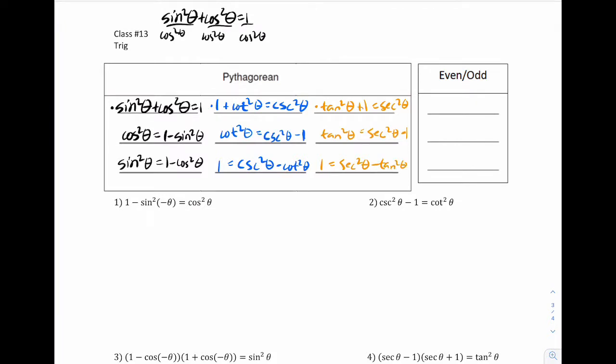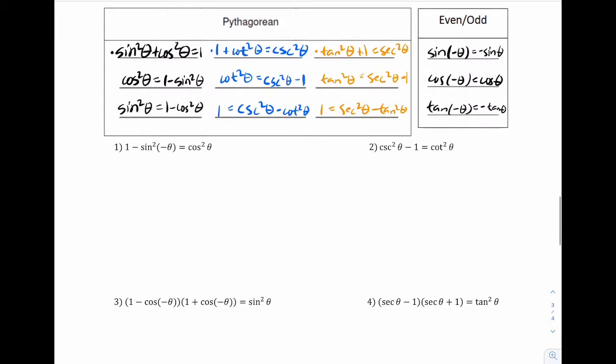The even-odd, hopefully we can recall these. Sine is odd, which means a negative has to come out. Cosine is even, which means a negative does not matter. And tangent is odd, which means a negative will come out. And now you can think of this as like your new tool belt for approaching these problems. So I'm going to do four of them with you. Then you do the rest of the four for your video work.